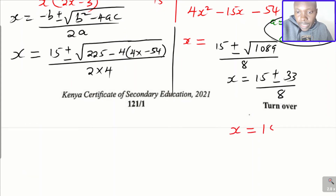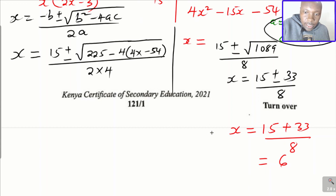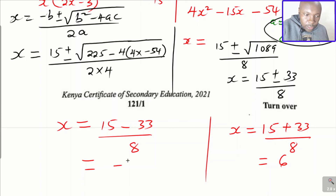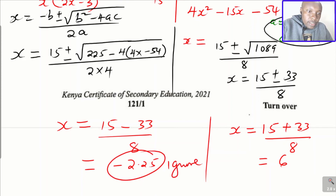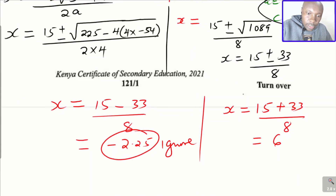Taking the positive case: x = (15 + 33) / 8 = 48/8 = 6. Taking the negative case: x = (15 − 33) / 8 = −18/8 = −2.25. We ignore the negative value because x represents speed, and speed cannot be negative. So x = 6.